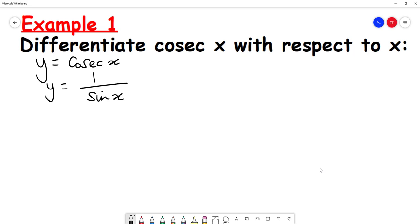Here I'm going to treat this as a quotient, so I'm going to use the quotient rule. dy by dx is v u dash minus u v dash, all divided by v squared.